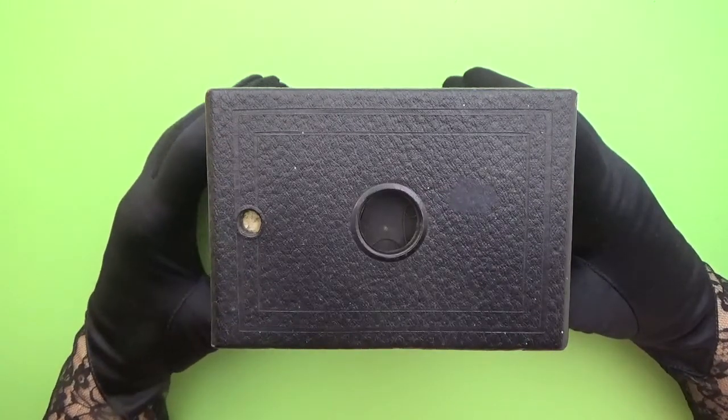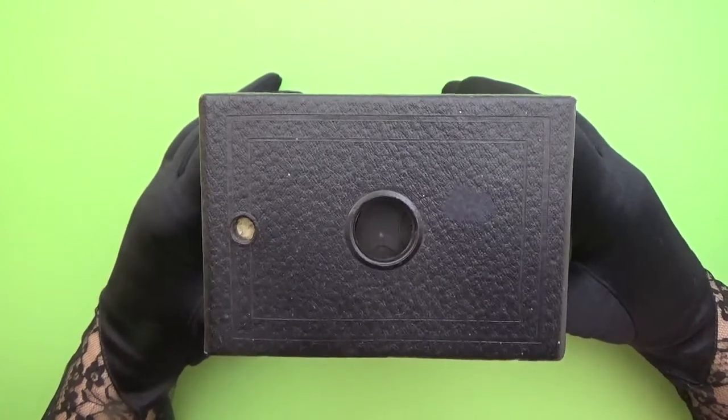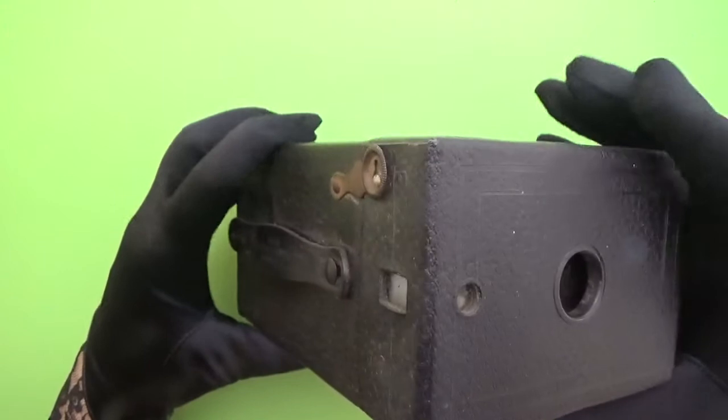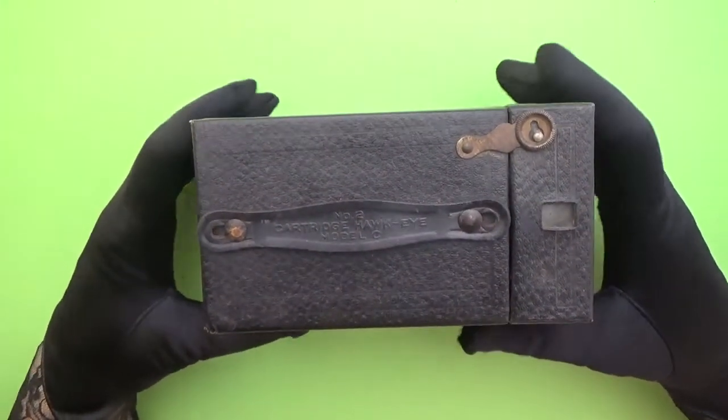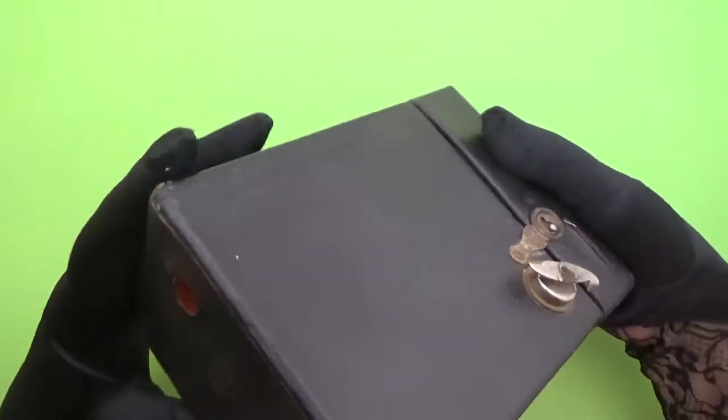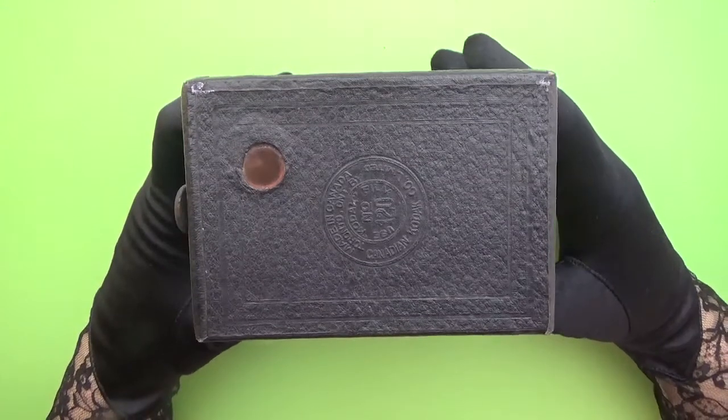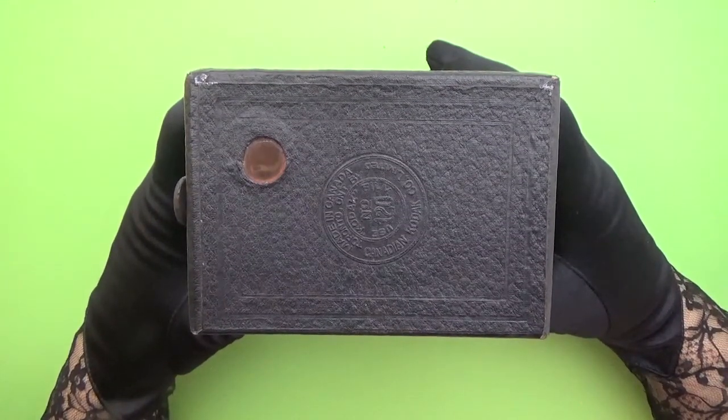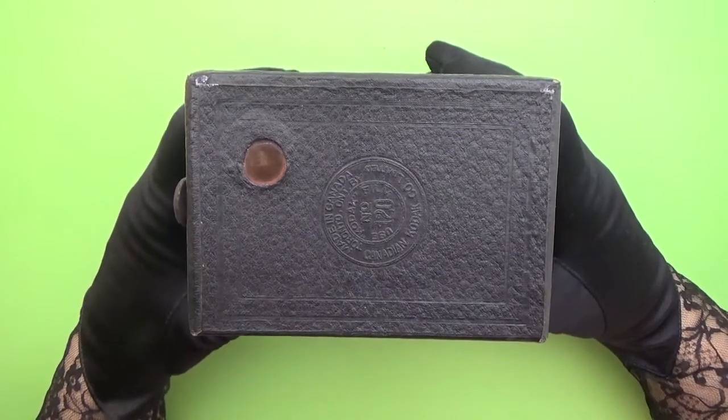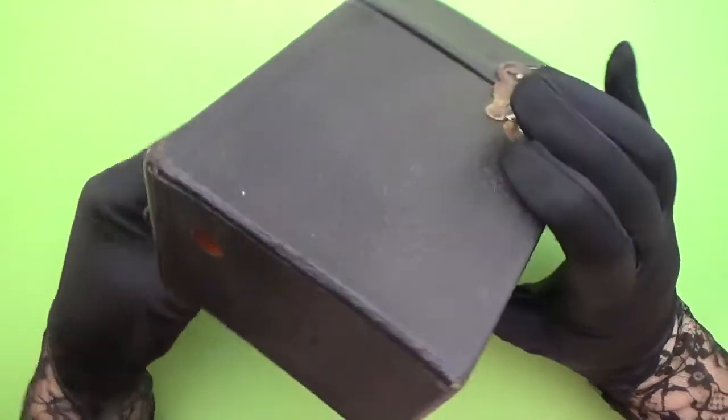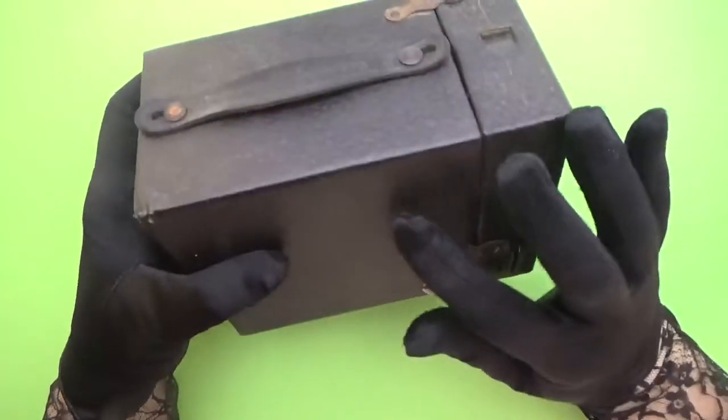Hello, this is a Kodak Cartridge Hawkeye Number Two Model C, a very simple box camera. This particular model was made in Toronto, Canada. You can see it on the leather on the back. They were made since 1913 and on. These cameras were made out of cardboard covered with leather.